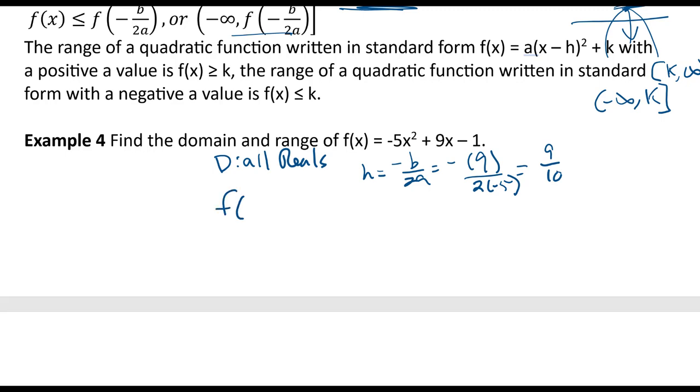So if I look at f(9/10), it's not a pretty number: -5(9/10)² + 9(9/10) - 1. So it's -5 times 81/100 plus 9 times 9 is 81/10 minus 1. So -5 times 81, I think it's 405. So I'm going to say -405 over 100.